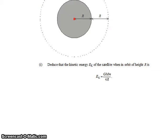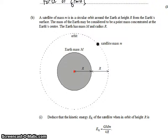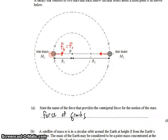We're asked to deduce that the kinetic energy Ek of the satellite when in orbit is this. Well, just like we said up here, the force of gravity is what's pulling the satellite in towards the center.